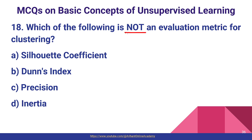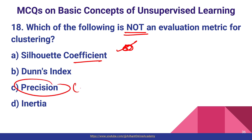Question number eighteen: which of the following is not an evaluation metric for clustering? Silhouette coefficient is a clustering metric, Dunn index is also a clustering metric, but precision is used for classification technique — not for clustering. So precision is the correct answer as it is not a clustering metric.